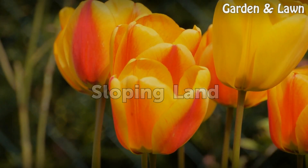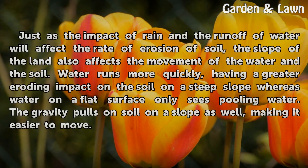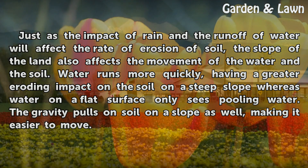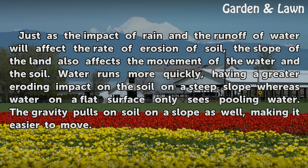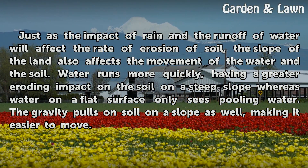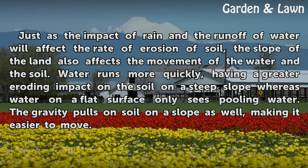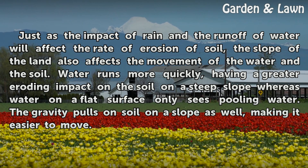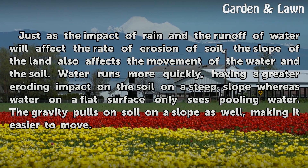Sloping Land. Just as the impact of rain and the runoff of water will affect the rate of erosion of soil, the slope of the land also affects the movement of the water in the soil. Water runs more quickly, having a greater eroding impact on the soil on a steep slope, whereas water on a flat surface only sees pooling water. Gravity also pulls on soil on a slope, making it easier to move.